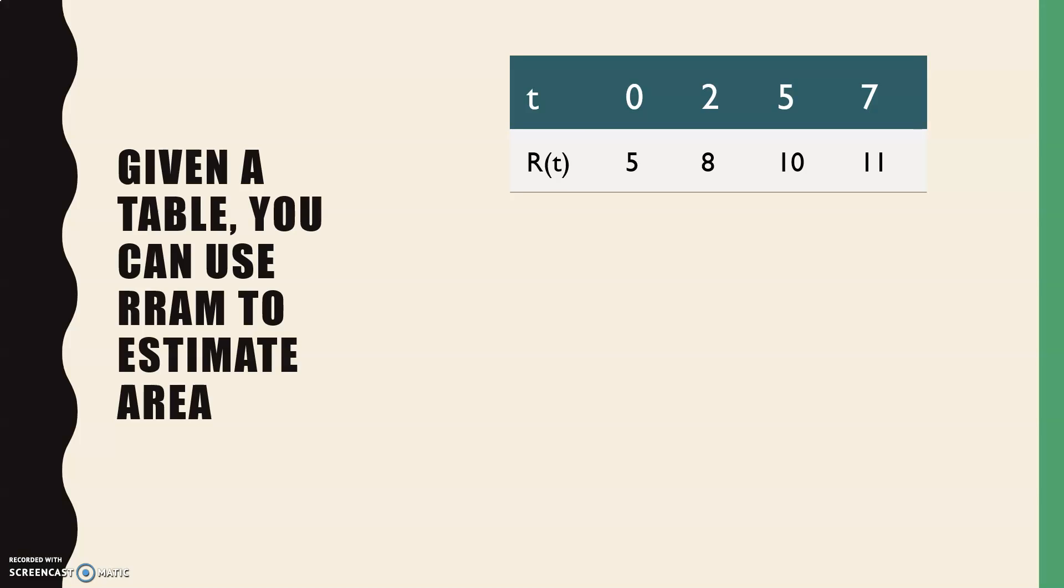If we want with the same numbers, if we want to use RRAM, I think it's always helpful to plot them out, at least roughly. So I would use the right side of the rectangles. And that means I would not be using this value. I would not be using the first value. I would be starting with the 11, because now I'm using the right side of the rectangle. So the first rectangle has a width of 2 and a height of 11. The next rectangle has a width of 3 and a height of 10. And then my first rectangle has a width of 2 and a height of 8. And so our sum would be 16 plus 30 plus 22, or 68.